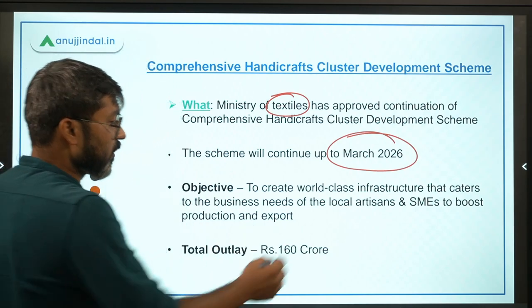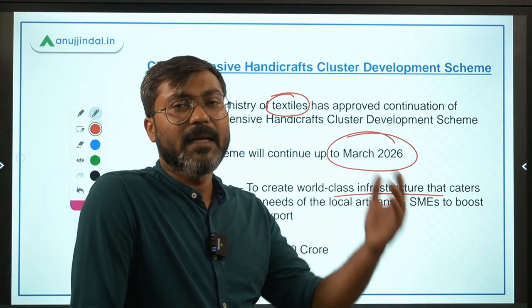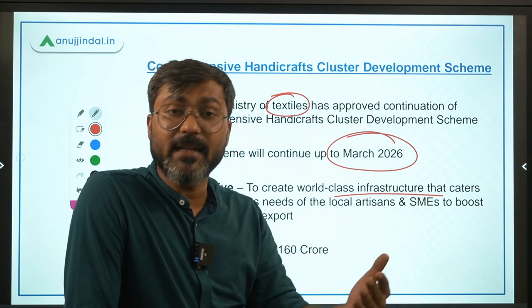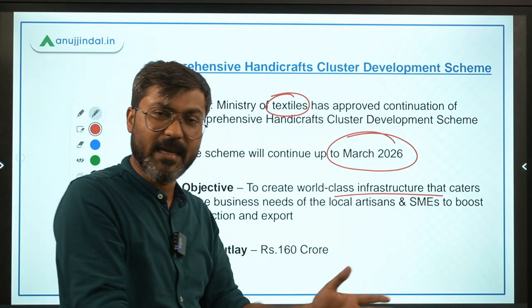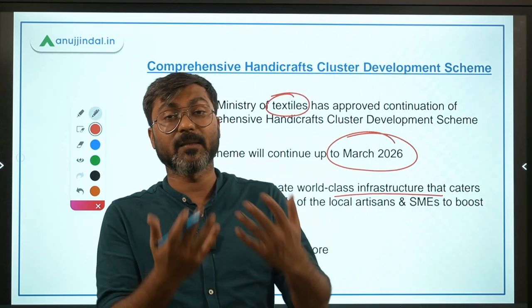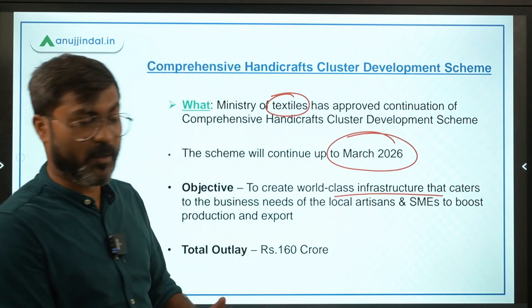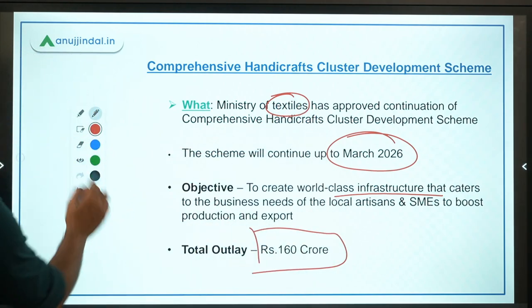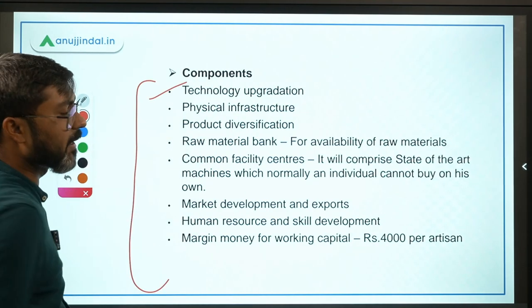The objective of this scheme is to create world-class infrastructure that caters to the needs of local artisans and small and medium enterprises, so that their production, sale, marketing, and export can be increased. Total outlay for this extension is 160 crore. Components include technology upgradation, physical infrastructure, product diversification, and a raw material bank that will provide raw materials for local artisans.